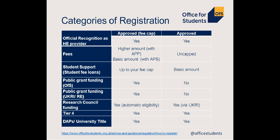There are two categories of registration and each has different access to particular benefits. The first category is Approved Fee Cap. You should apply in this category if you want to be officially recognised as a provider of higher education, while having your fees capped. If you apply for an access and participation plan, your fees will be capped at the higher amount — £9,000 or £9,250 if you have a TEF award. If you do not intend to charge over the basic amount — £6,000 or £6,165 with a TEF award — you will need to have an access and participation statement.